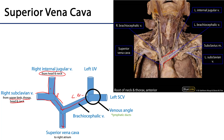The area where these veins come together is known as the venous angle. There is a left and a right venous angle, and these are important for lymphatics because it is within the vicinity of these venous angles that the lymphatic ducts return lymph back into venous circulation. On the left side we have the thoracic duct, and on the right side the right lymphatic duct.